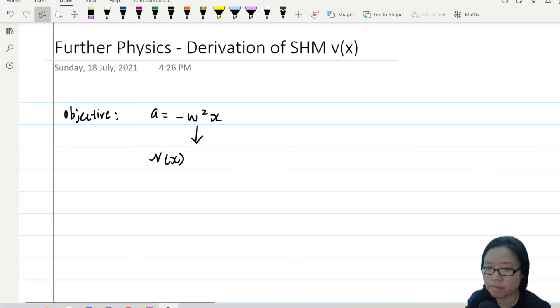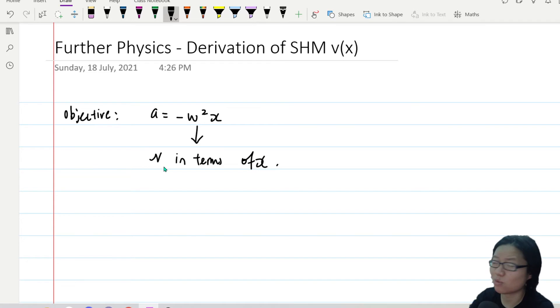Our objective in this video is to start with the simple harmonic motion general equation a = -ω²x and come out with v. We want to find v in terms of x. I will start with what I'm supposed to start with: a = -ω²x.